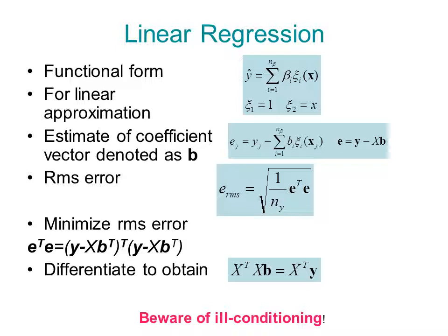So a special case of regression that we are going to use in this course is linear regression, which is written as y-hat equals the sum of coefficient beta i times shape function psi i. It doesn't mean that the shape functions are linear, only that the model y-hat depends linearly on the coefficient betas. For example, for the linear approximation we had before, psi 1 was equal to 1 and psi 2 was equal to x. You can check the rational approximation and see that we cannot write it in this form.